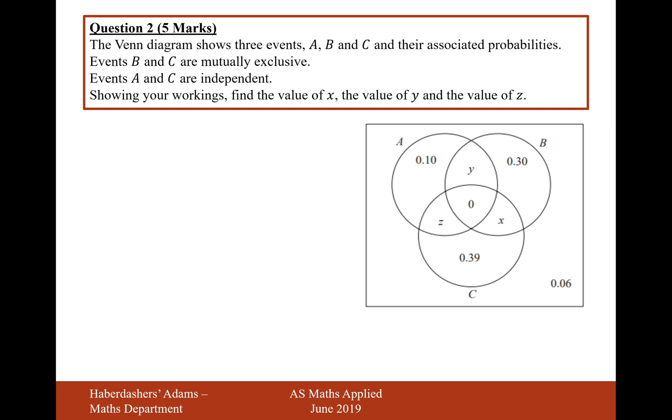The Venn diagram shows three events, A, B and C, and their associated probabilities. Events B and C are mutually exclusive. Events A and C are independent. Show your workings, find the value of X, the value of Y and the value of Z.